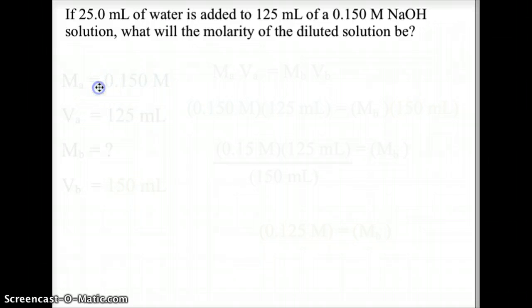First, let's identify all our knowns and unknowns. So our MA, molarity of the first solution, is 0.15 molar. Our initial volume is 125 milliliters. Our secondary molarity, or the molarity of the diluted solution, is what we are looking for. And we are going to have a final volume of 150 milliliters because we're adding the 25 milliliters to the 125 milliliters, making a total solution of 150 milliliters.